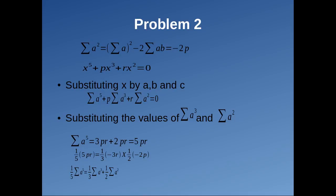Multiplying the given equation by x² we get x⁵ plus px³ plus rx² equals 0. Substituting x by a, b, and c respectively and adding, we get sigma a⁵ plus p·sigma a³ plus r·sigma a² equals 0. Substituting sigma a³ equals minus 3r and sigma a² equals minus 2p, we get sigma a⁵ equals 5pr. We then see that one-fifth of sigma a⁵ equals one-third of sigma a³ plus one-half of sigma a², which is precisely our required expression: one-fifth of sigma a⁵ equals one-third of sigma a³ plus one-half of sigma a².